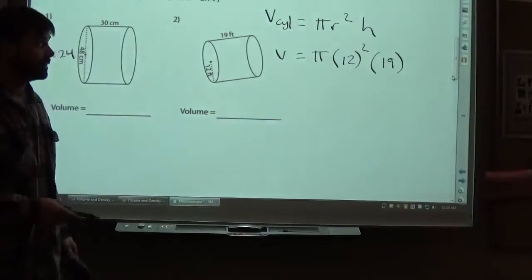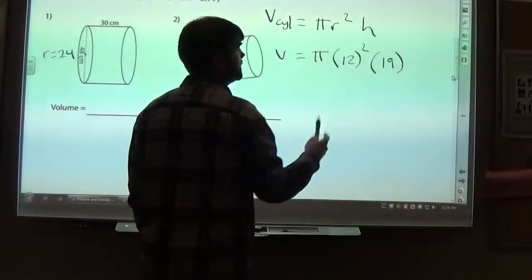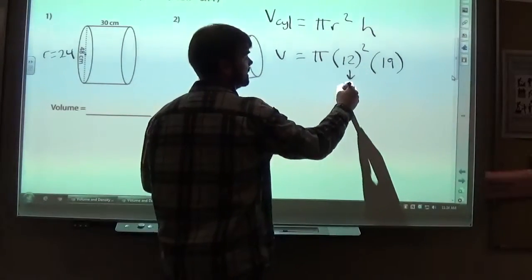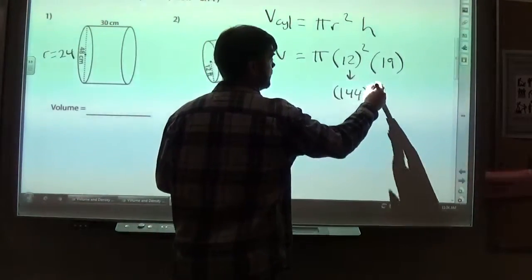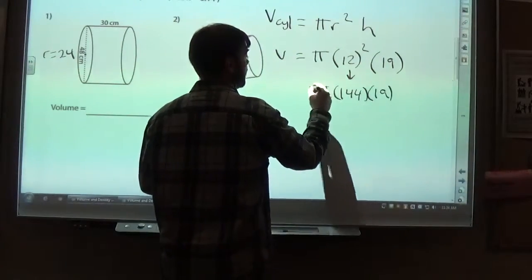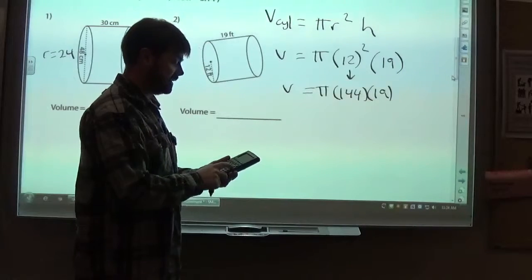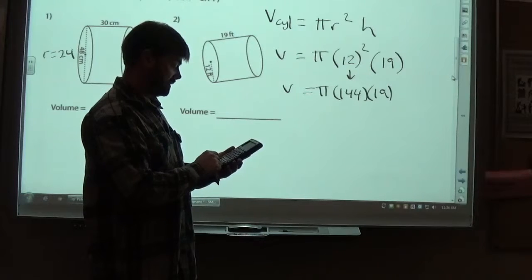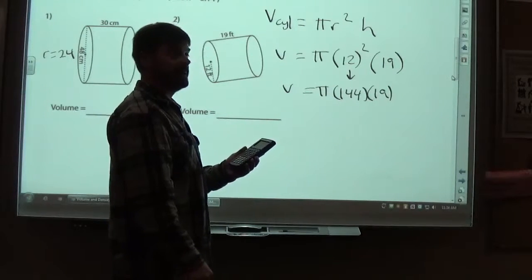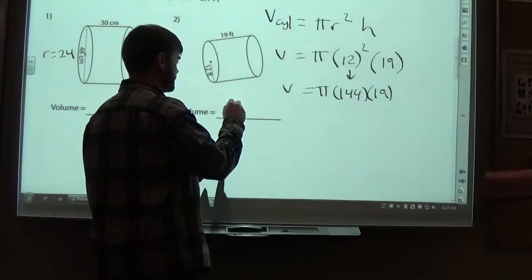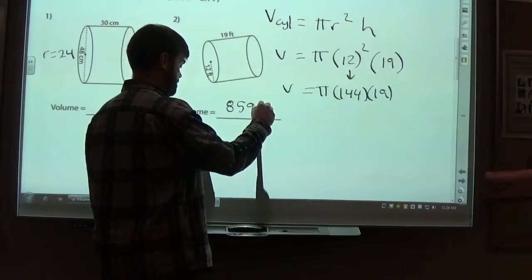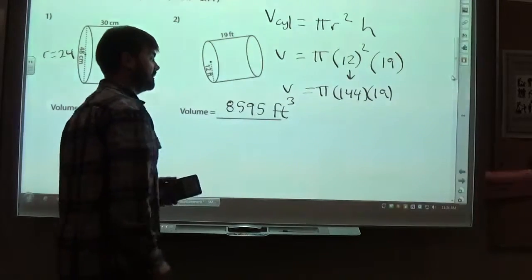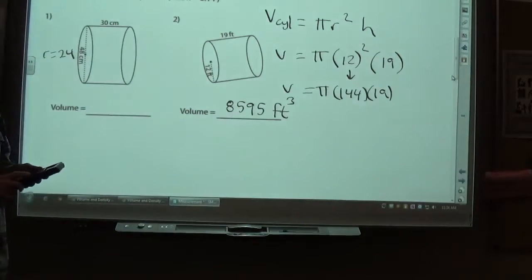Again, order of operations is important. You have to square prior to multiplying by h or multiplying by pi. I'll just show the step here, 12 squared is 144. So that's 12 times 12 is 144. Then we can multiply these in any order. So I'll do that pi times 144 times 19. This gives me 8595.39. So I go 8595. And then this is going to be feet by feet by feet, which is cubic feet. So there's your example for cylinders.